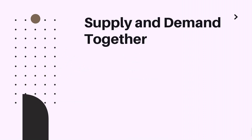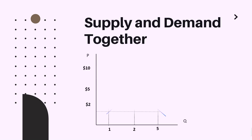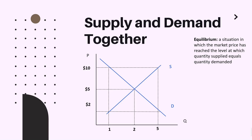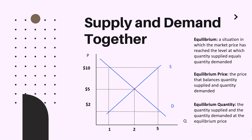Now let us understand how these two forces interact in the market. When we graph the supply curve and the demand curve together, we see one curve with a positive slope and the other with a negative slope. They intersect at a critical point called equilibrium — the situation in which the market price has reached the level at which quantity supplied equals quantity demanded. The equilibrium price balances both sides, and the equilibrium quantity is the quantity both supplied and demanded at that price.